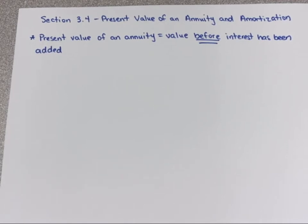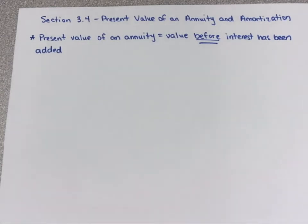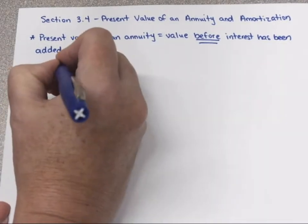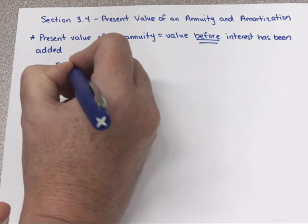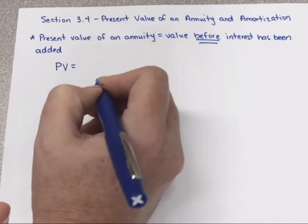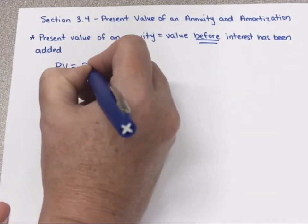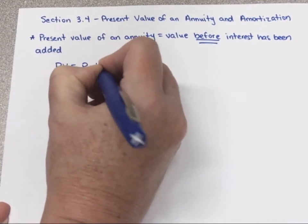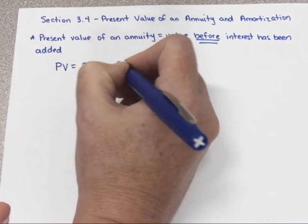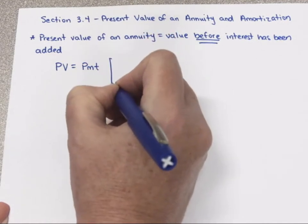Future value was the amount that already included the interest. I'm not saying interest won't be added at some point, but the present value is the amount that the account is worth before interest has gotten a chance to work. Here is the formula for present value, and it's going to look somewhat similar to the one for future value, but with just a little bit of shifting.